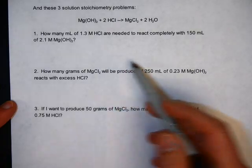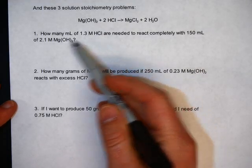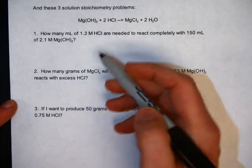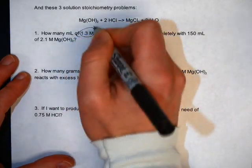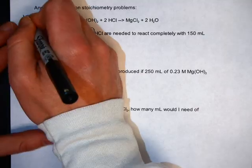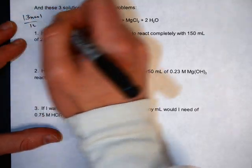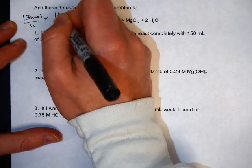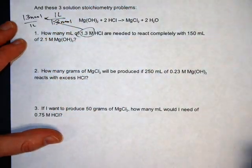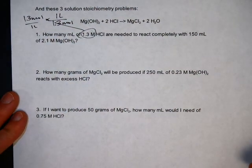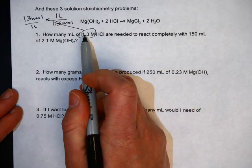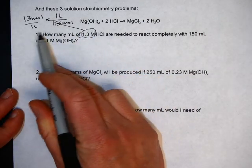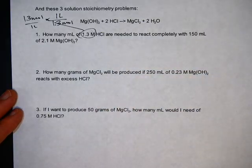One thing you should know is, whenever you're starting a solution stoichiometry problem, you never start with a capital M number. These are going to be your conversion factors, and these mean one of two things. It either means 1.3 moles per liter or 1 liter for every 1.3 moles. It's going to be a conversion factor depending on how you want to flip it, depending on where you need it in the problem. Don't get in the habit of calling this 1.3 molar. Think of it as 1.3 moles per liter; that will help you for these problems.